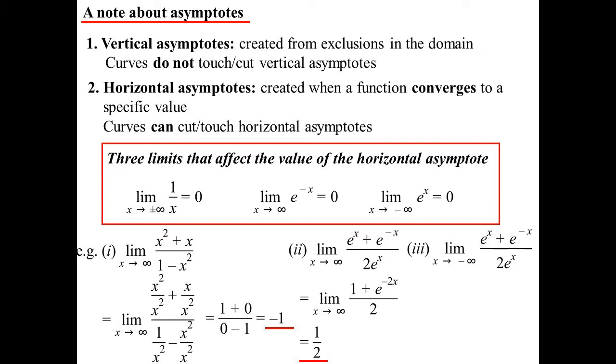Well, now the limit I want is e to the power of positive X. So now if I multiply everything by e to the X, that'll get rid of the e to the negative X's. And I'll end up with e to the two X plus one on two e to the two X.